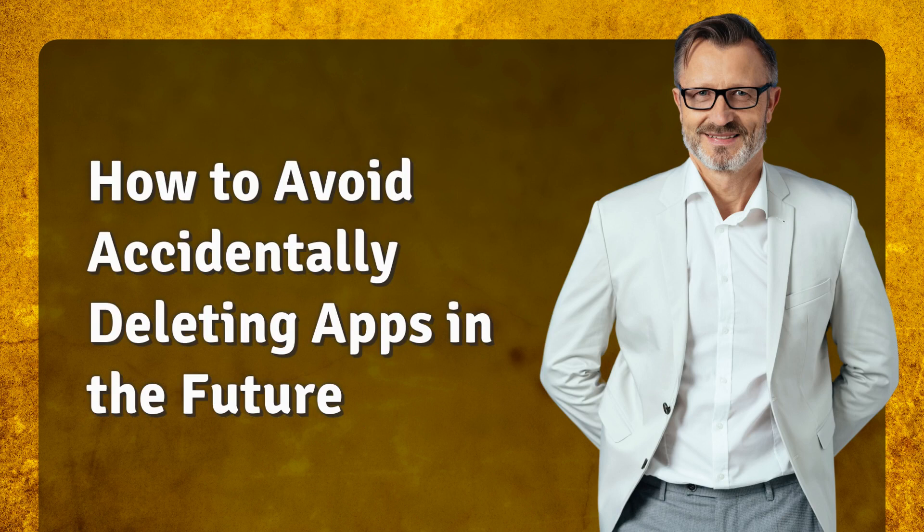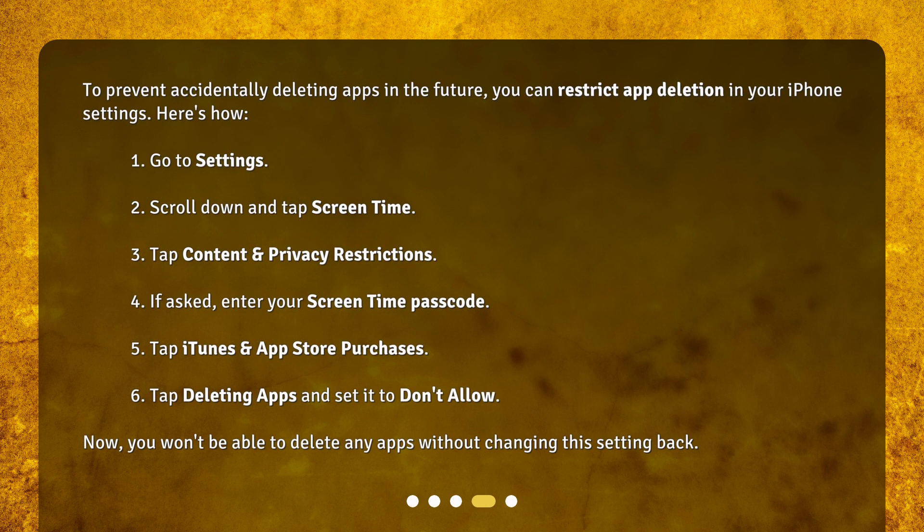How to avoid accidentally deleting apps in the future: To prevent accidentally deleting apps, you can restrict app deletion in your iPhone settings. Here's how: 1. Go to Settings. 2. Scroll down and tap Screen Time. 3. Tap Content and Privacy Restrictions. 4. If asked, enter your Screen Time Passcode. 5. Tap iTunes and App Store Purchases. 6. Tap 'Deleting Apps' and set it to 'Don't Allow'. Now you won't be able to delete any apps without changing this setting back.